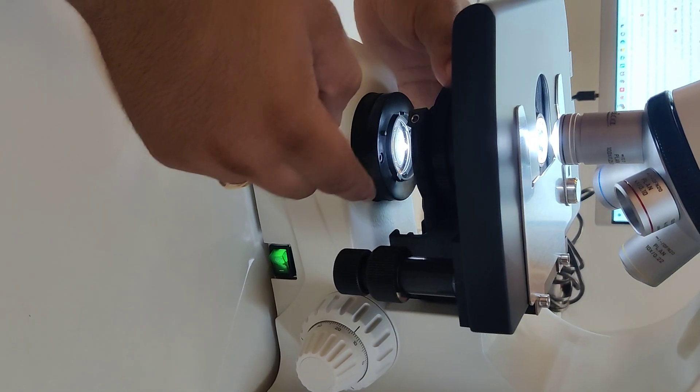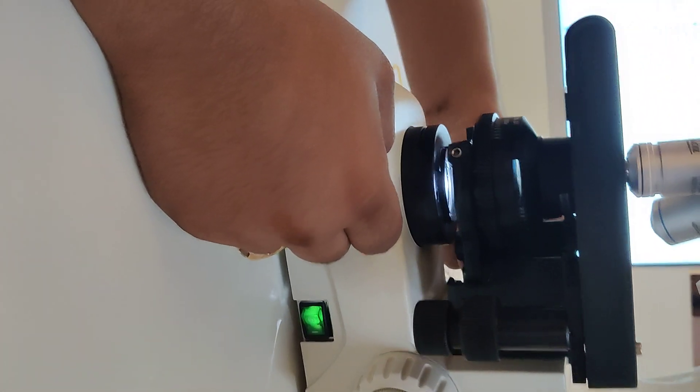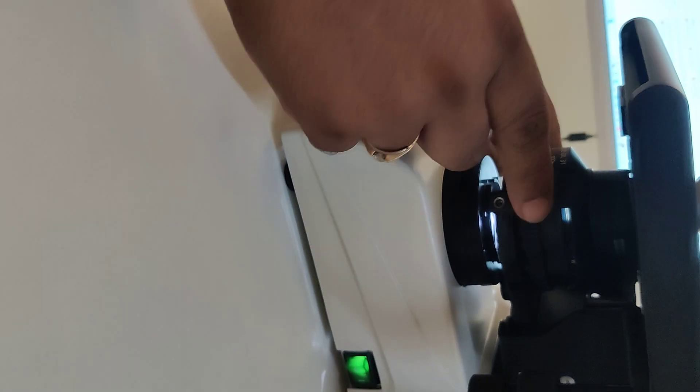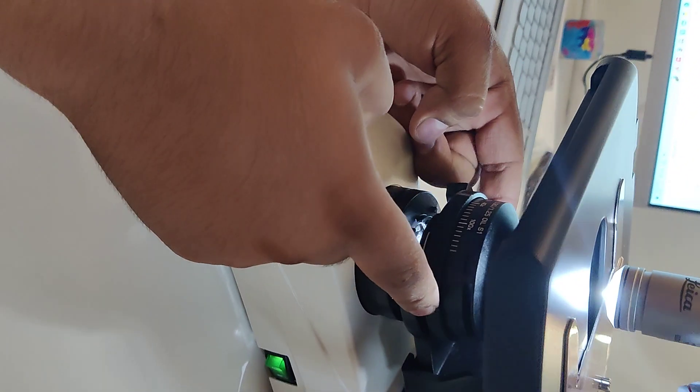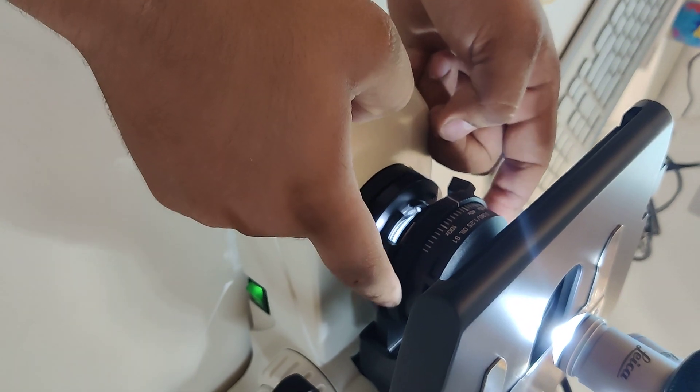The iris diaphragm is there. It has got a condenser movement up and down. Here you can see the markings of the microscope: 10, 40, 100. All those markings are there showing how much condenser we need to open.